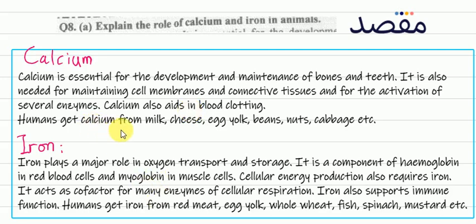Where do humans get calcium from? Sources of calcium include milk, cheese, egg yolk, beans, nuts, and cabbage.